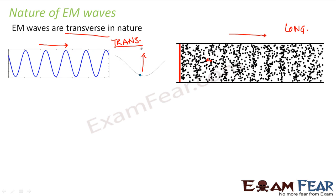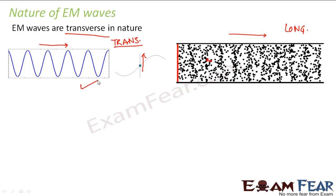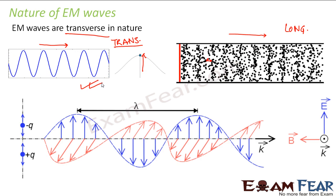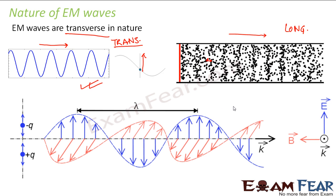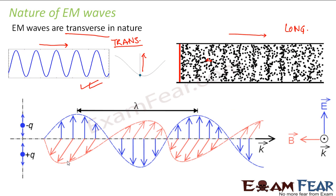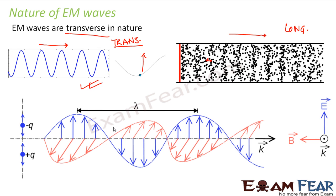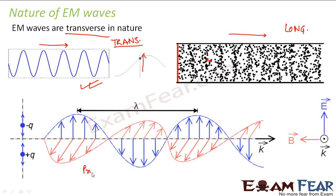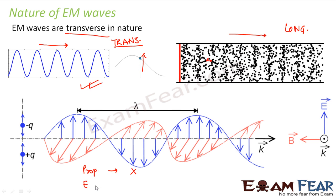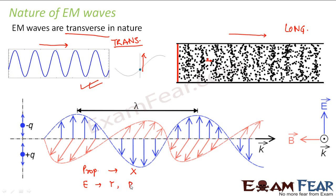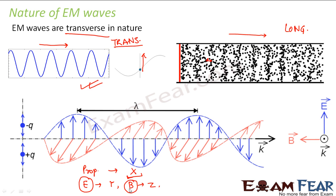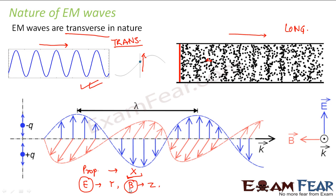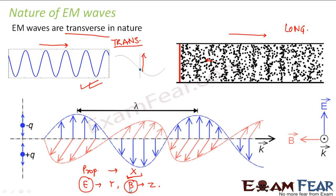When we talk about electromagnetic waves, they fall under the transverse category — electromagnetic waves are transverse in nature. If the wave propagation takes place along the x-axis, the electric field and the magnetic field are in directions perpendicular to the direction of wave propagation. So if the wave propagates along the x-axis, the electric field will be along the y-axis and the magnetic field will be along the z-axis. Both the electric field and the magnetic field are perpendicular to the direction of propagation — that is why electromagnetic waves are transverse waves.